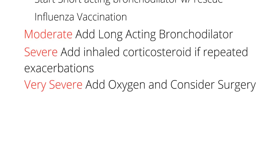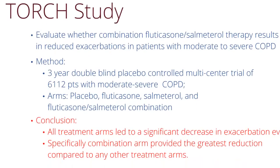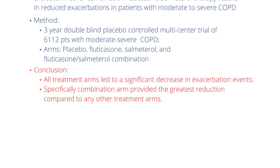Let's look at an important study called the TORCH study. It evaluated whether combination therapy of fluticasone with salmeterol resulted in reduced exacerbations in patients with moderate to severe COPD. They conducted a double-blind placebo-controlled trial with about 6,000 patients across four arms: placebo, fluticasone alone, salmeterol alone, and the combination. All treatment arms showed decreased exacerbation events, but specifically the combination arm provided the greatest reduction in exacerbations compared to any other treatment arm — and this was a statistically significant reduction.